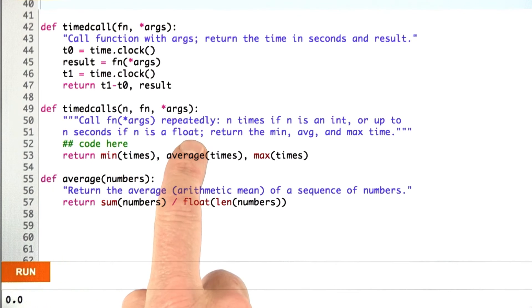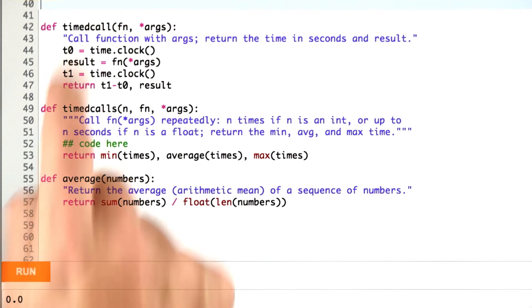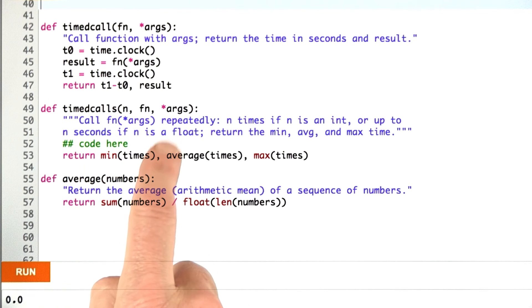But if n is a floating point number, then we keep on repeatedly calling timed call for the number of trials it takes until we've added up to that number of seconds. If n equals the integer 10, we repeat 10 time calls. If n equals the floating point number 10.0, we repeat until 10.0 seconds have elapsed.